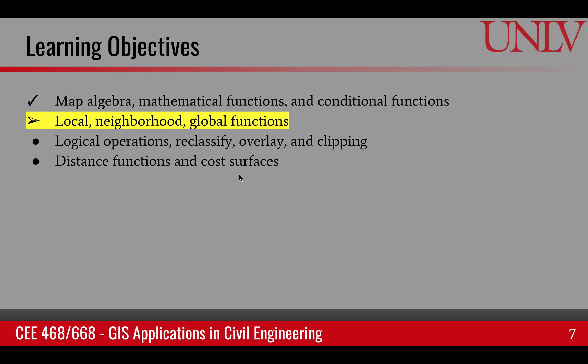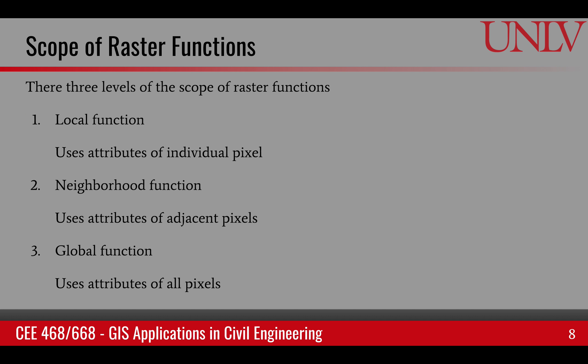The next objective is about local, neighborhood, and global functions. They are similar to the local, neighborhood, and global operators in spatial analysis, and this is basically the scope of the raster functions. There are three scopes. Local functions use the attributes of individual pixels. In the case of neighborhood functions, the attributes of adjacent pixels are used as well. Whereas in the case of global functions, pixels from all the raster data are used.